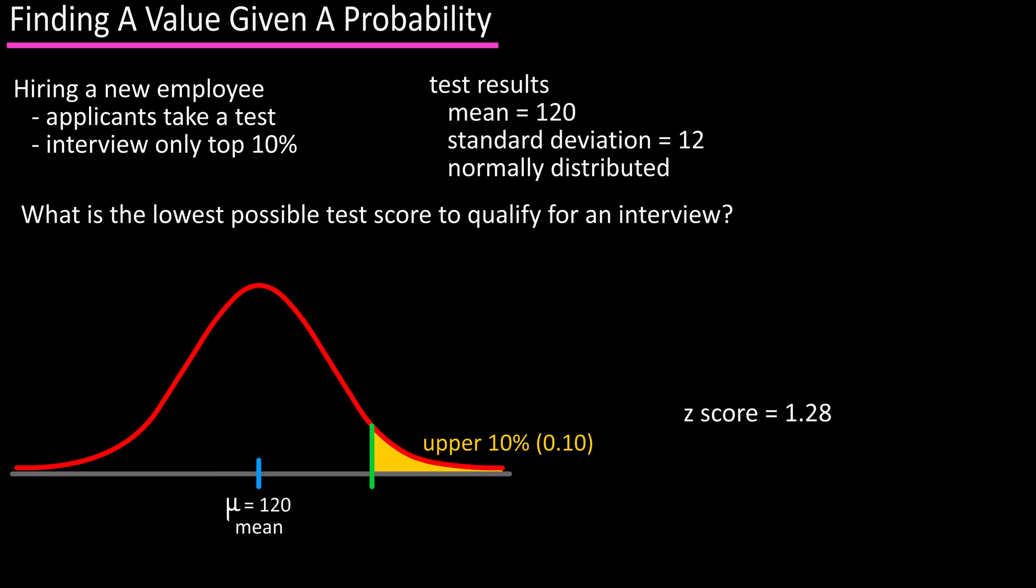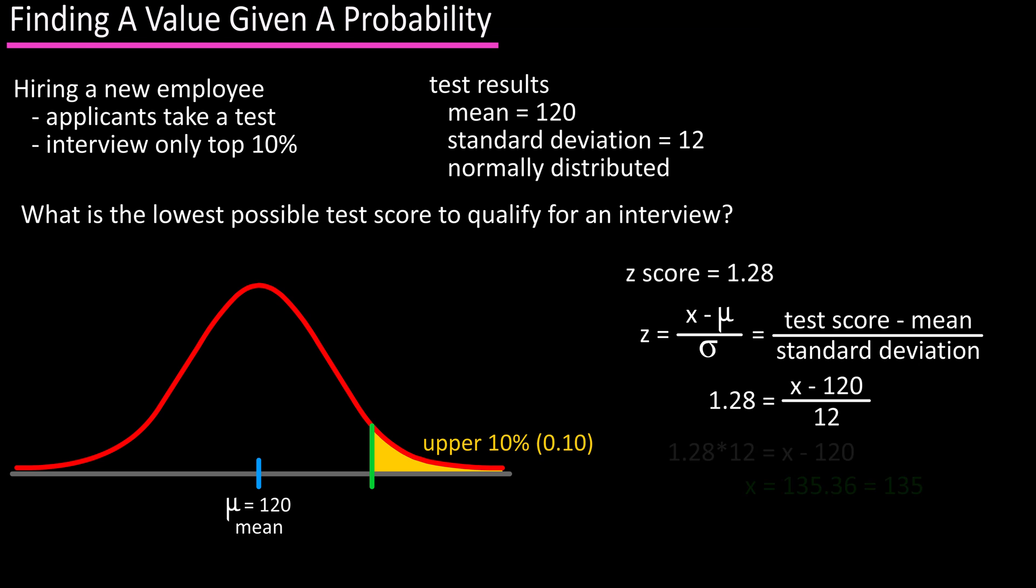Now that we have the z-score, we can plug that into the z-score formula and do some math to find the test value we're looking for. The formula for a z-score is z, or in this case 1.28, equals x, or in this case our test value, minus the mean, which is 120, divided by the standard deviation, which is 12. And calculating out, we have 135.36, which we can round off to 135. So in this case you would want to interview the applicants that scored 135 or higher on the test.